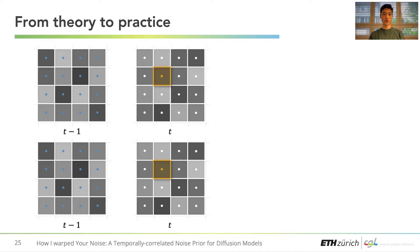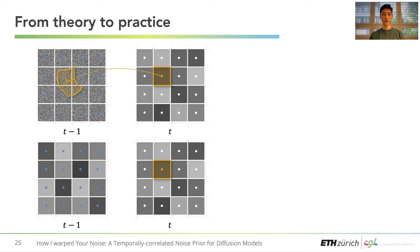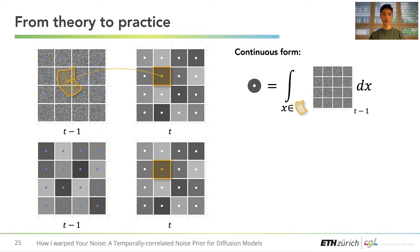So how is noise warping implemented in practice? Well in the continuous case, we represent the noise in the previous time step as a white noise field, which we then integrate over some back-warped regions.